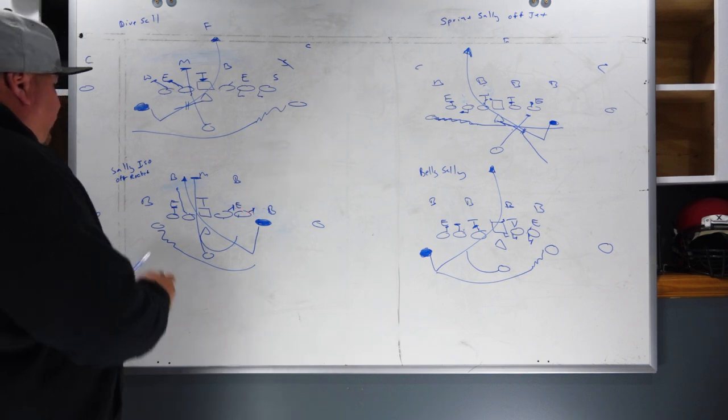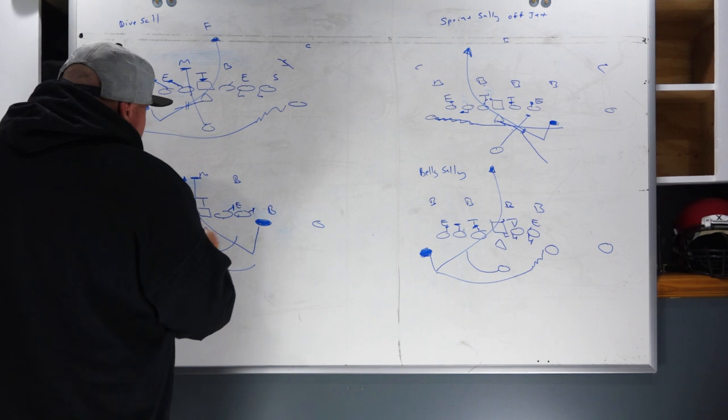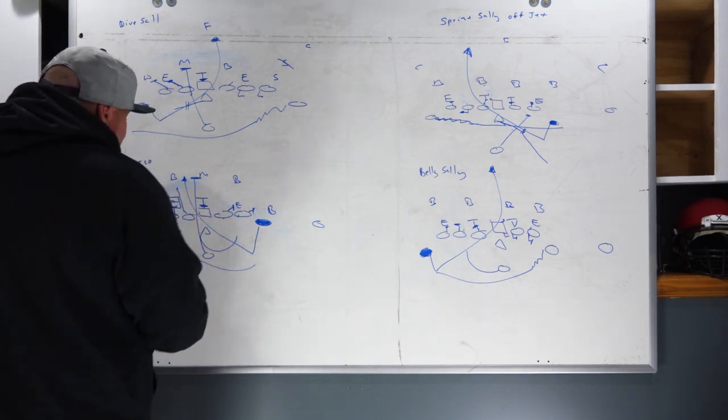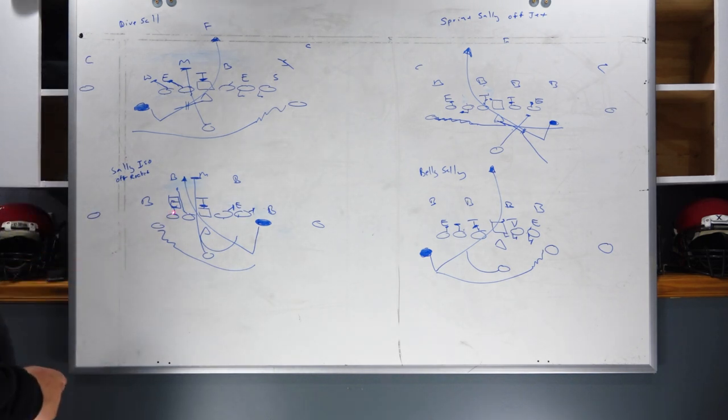On the front side of the play, starting with the center, he will take the nose wherever he wants to go. We are going to read this four technique end right here with the left guard and left tackle. If he spikes across the tackle's face, the guard gets him and the tackle climbs to get the linebacker. If he spikes outside, the tackle gets him and the guard climbs to get the play side linebacker. Off our rocket fake, we always dive the fullback backside. He will isolate on the Mike. Here's where the Ice part of the play is, here's your isolation.